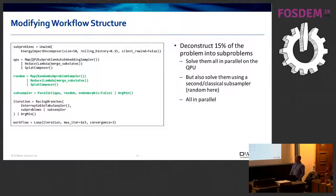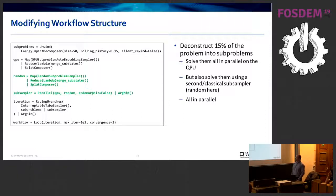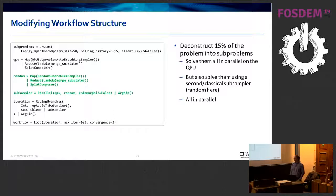Another extension: instead of just running the QPU in parallel on all sub-problems at once, let's run maybe some other sampler — simulated annealing, or even just random variable values to escape local minima. The sub-sampler is then defined as a parallel execution of QPU and, in this case, a random sub-sampler in the workflow.